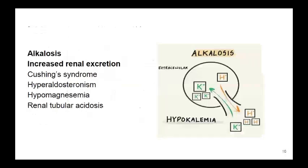Increased renal excretion is seen in Cushing syndrome, hyperaldosteronism, hypomagnesemia, and renal tubular acidosis. In Cushing syndrome, there is an increased level of cortisol. This cortisol increases the GFR and renal plasma flow, thereby increasing potassium excretion.